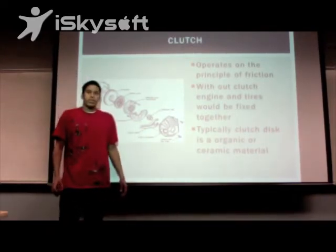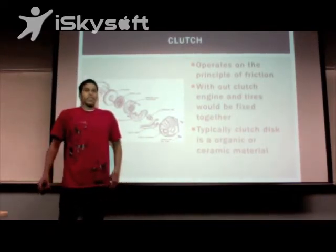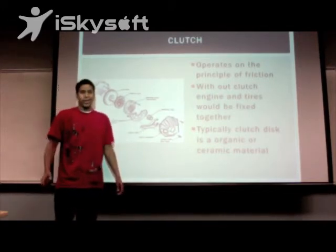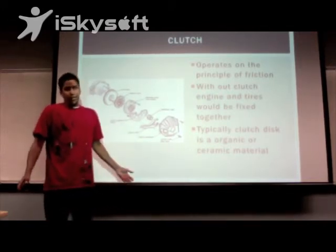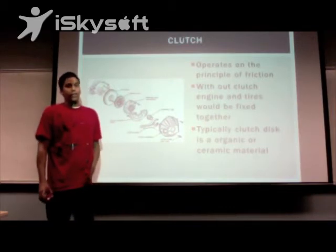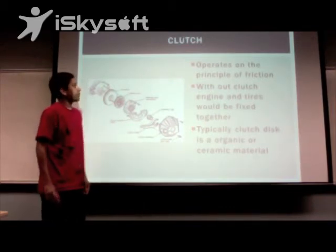Typically a clutch disc is made up of a ceramic or organic material, a material typically with a very high coefficient of friction.